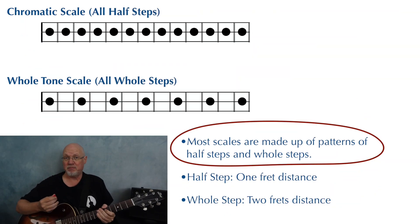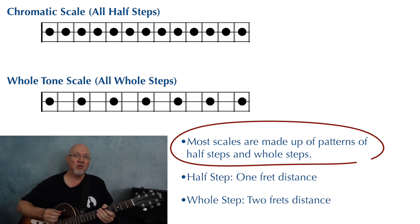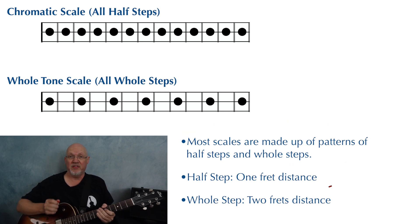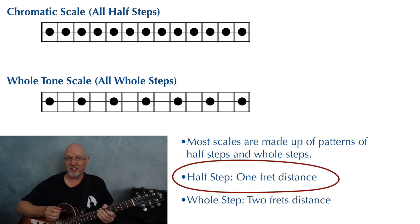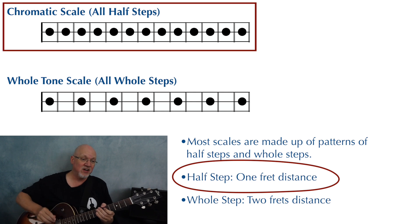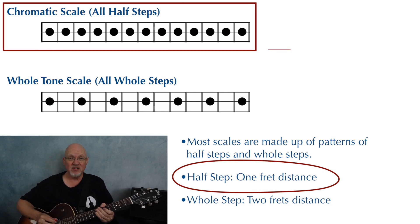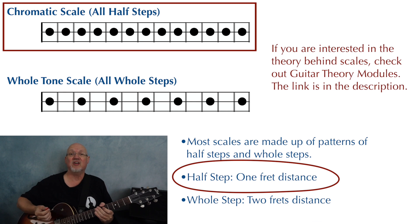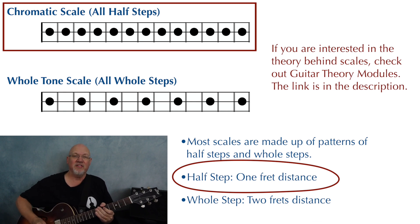Most scales are made up of patterns of half steps and whole steps. On the guitar, a half step is one fret's distance, so in this diagram you're looking at a series of half steps. In fact, this is a scale — it's the chromatic scale, which is nothing but half steps.